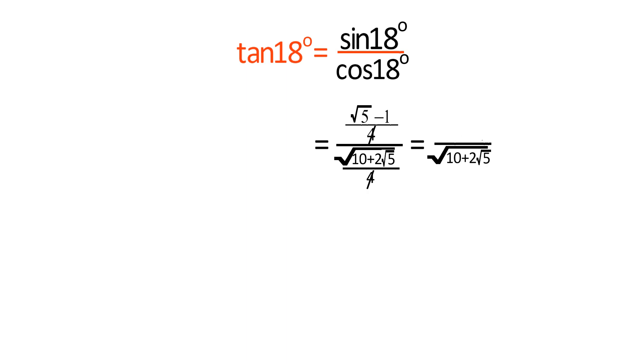We can write square root 5 minus 1 as square root of 6 minus 2 root 5. Now rationalizing...